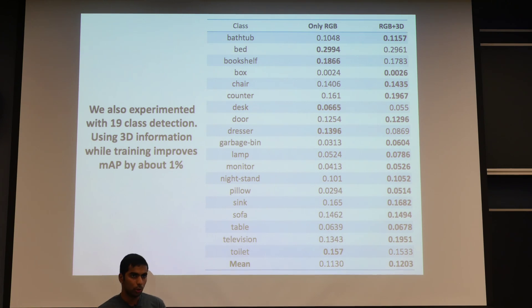We showed experiments on the five most occurring classes in the dataset, but to further corroborate our observations we extended it to 19 classes in the dataset. Again, we saw 1% improvement over not using 3D information at all. Thank you.